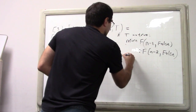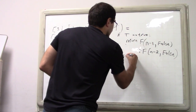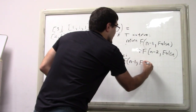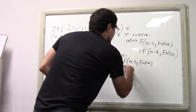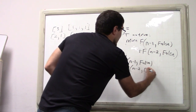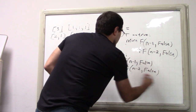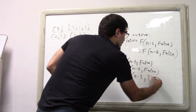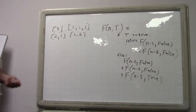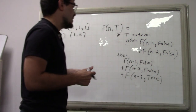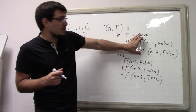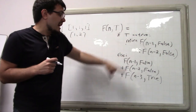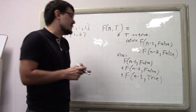If t is false — you're not tired — then you still have the option to climb one or two steps and not be tired, but you can also climb three steps and you will be tired if you do that. So you can simplify: F(n-1, false) + F(n-2, false) appear in both branches, and you conditionally add the three-step option depending on whether t is true.